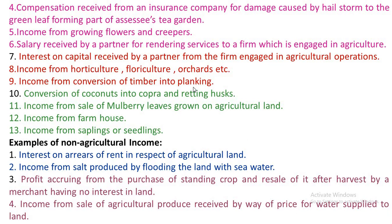Number 6 — Salary received by a partner for rendering services to a firm which is engaged in agriculture: If any partnership firm is engaged in agricultural activities and a partner receives salary from that firm relating to the agricultural activity, then the salary is to be treated as agricultural income. Number 7 — Interest on capital received by a partner from the firm engaged in agricultural operation: Whatever capital is invested by a partner for a firm relating to agricultural operations, the interest received on that capital shall be treated as agricultural income.